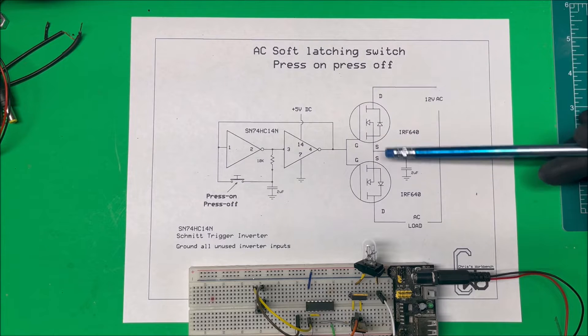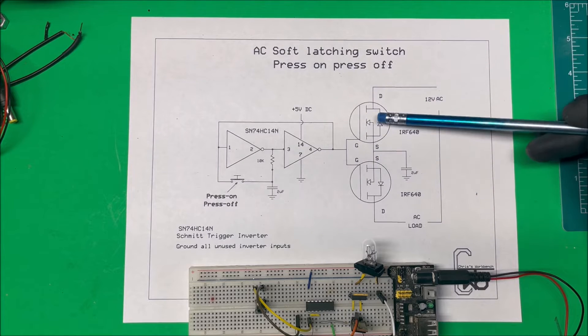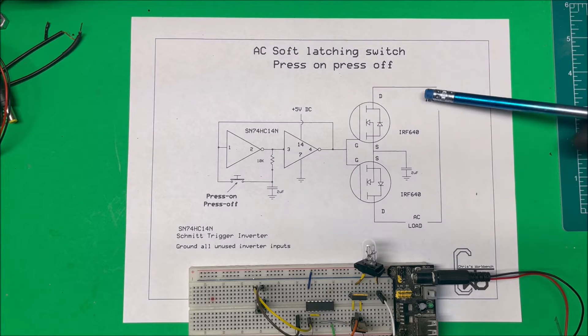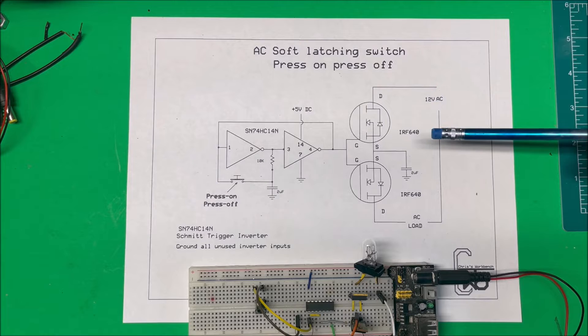I'm using two MOSFETs and they're back to back. The sources are tied together and then the drains, I'm running the circuit through the drains here. And the gates are tied together so they come on at the same time.